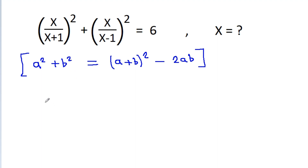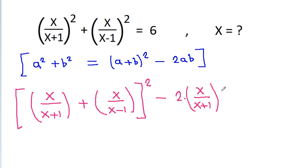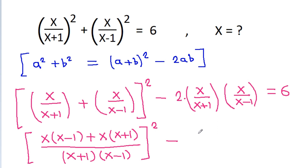So, this will be equal to (x/(x+1) + x/(x-1))² minus 2 times x/(x+1) times x/(x-1) is equal to 6. And (x+1)(x-1) will be expanded, giving us x(x-1) + x(x+1) in the numerator.